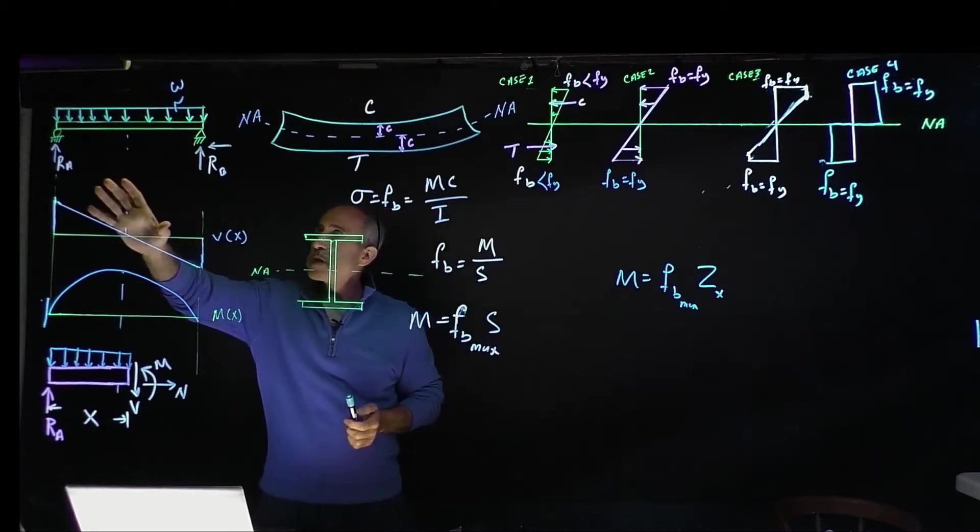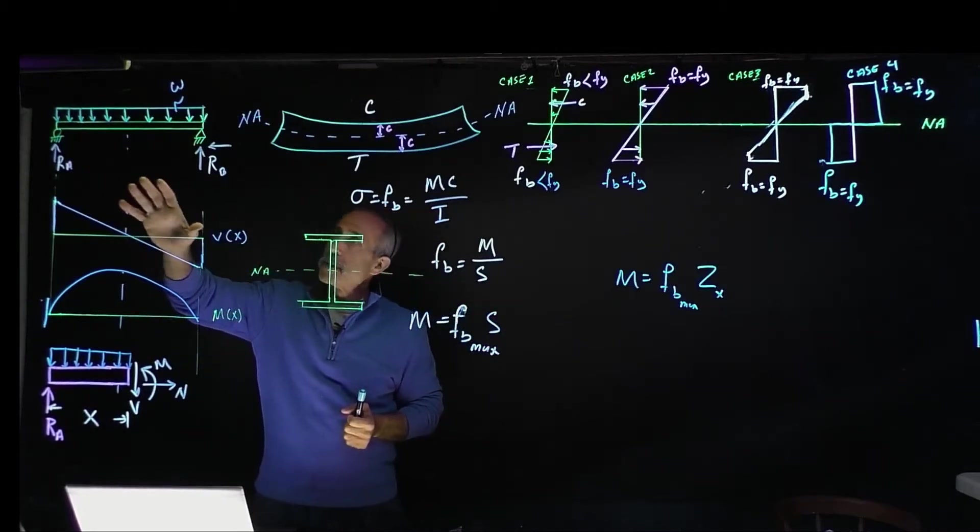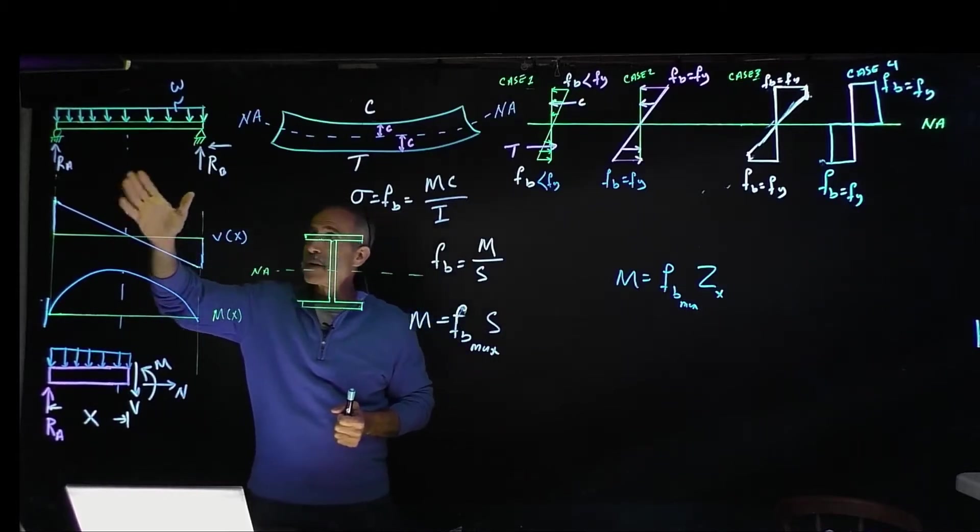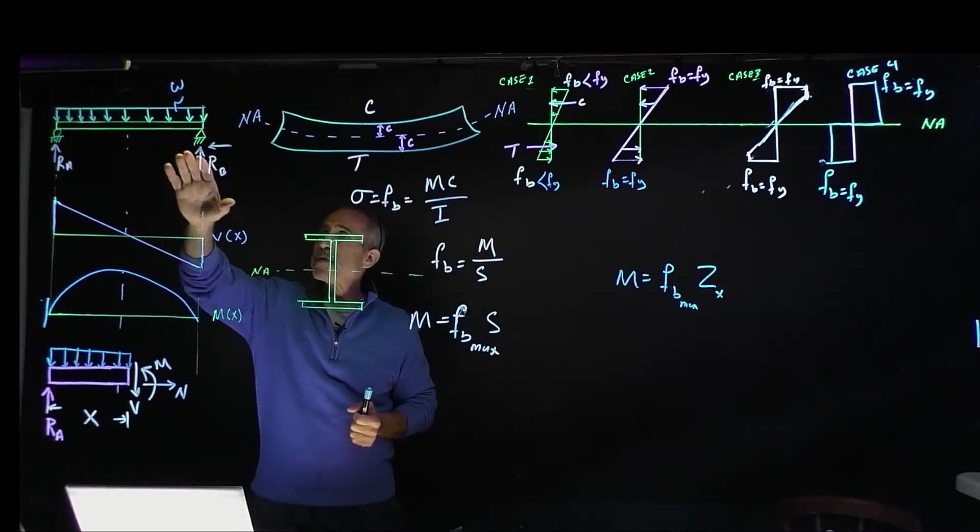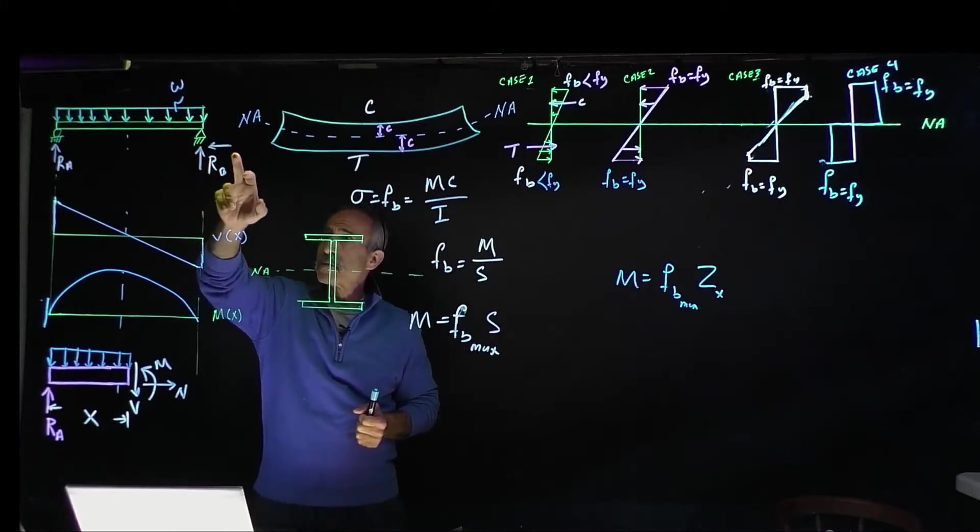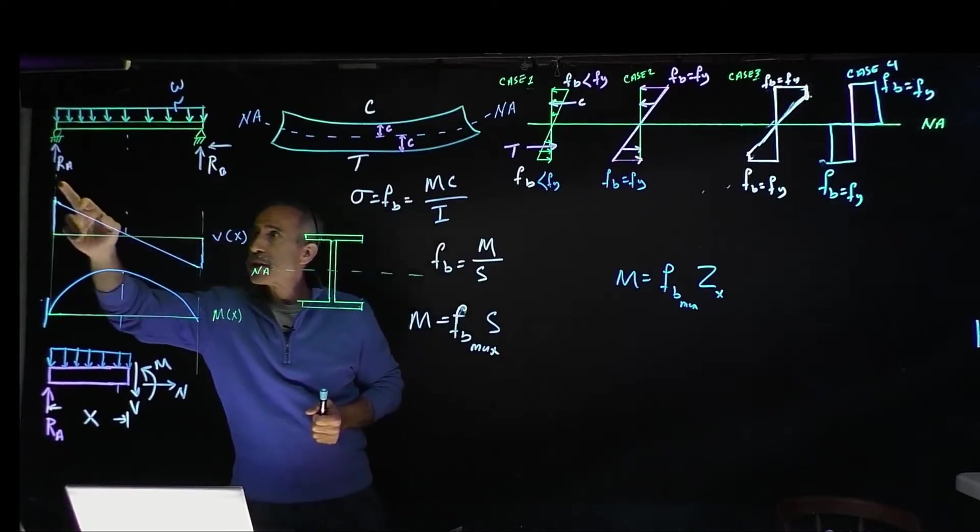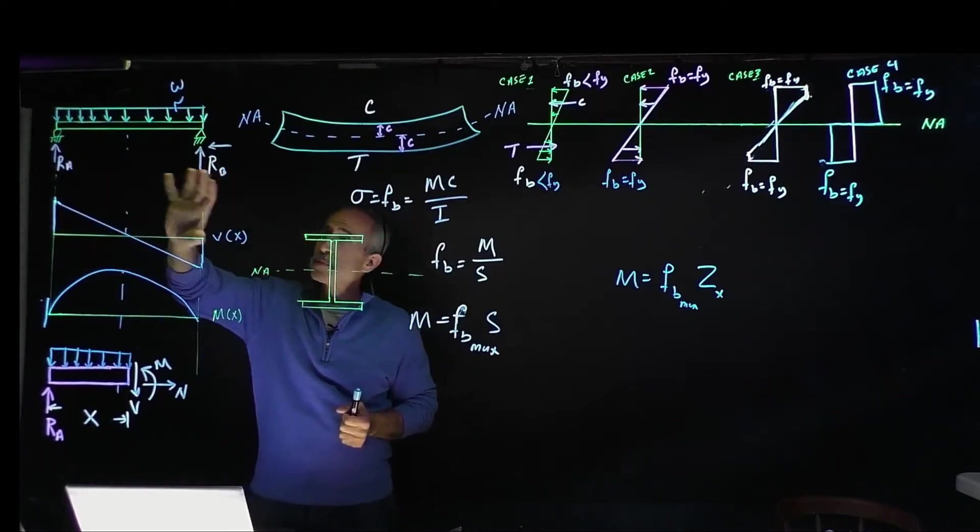We're going to have a simply supported beam with a uniform distributed load. We have a pin in one direction and one support system, which is basically R_Y and R_X, and then on the other end is a roller for being simply supported.